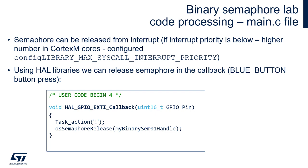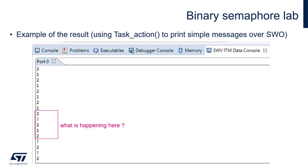After this, please compile the code, start a debug session, open the SWV ITM console, and start the application. Here is the expected result. '2' means that the binary semaphore was acquired, so Task 2 was unblocked. Then an IRQ was triggered, releasing the semaphore once again so Task 2 can take it next time. Task 2 was blocked because the semaphore is binary and cannot be given more than once. After Task 2 took the semaphore, it could be given again by Task 1 and then taken again by Task 2.